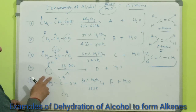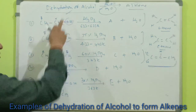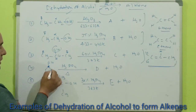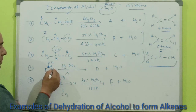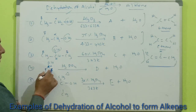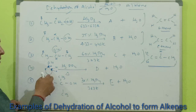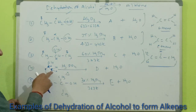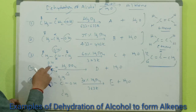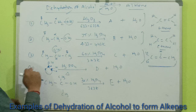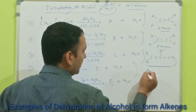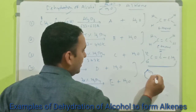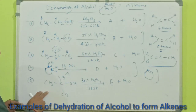In the fourth reaction, cyclohexanol undergoes dehydration in the presence of acid and heat. The carbon bearing the OH group is the alpha carbon, and the adjacent carbons are beta carbons. One hydrogen atom is removed from a beta carbon and the OH group from the alpha carbon, so a double bond forms between them. The product is cyclohexene.